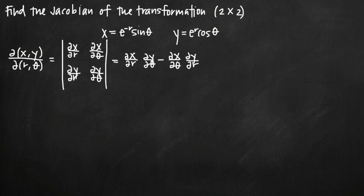Today we're going to be talking about how to find the Jacobian of the transformation. In this particular problem we've been given a parametric equation defined by x equals e to the negative r times sine theta, and y equals e to the r cosine theta. We have two equations x and y both defined in terms of r and theta — two variables in terms of two other variables.